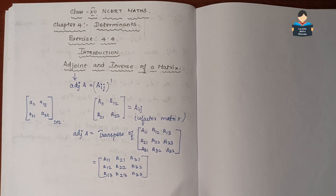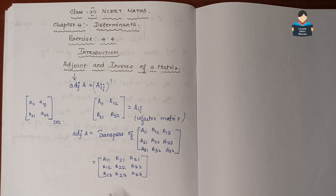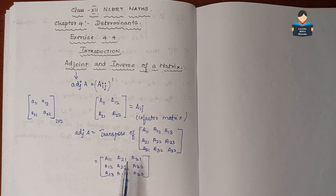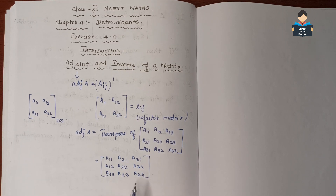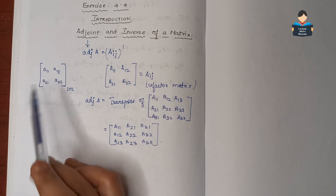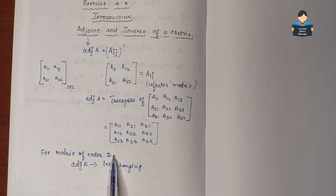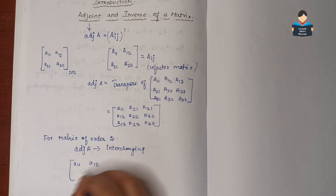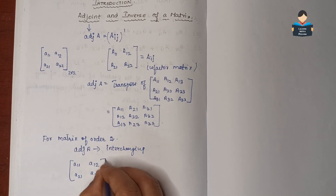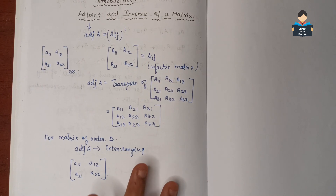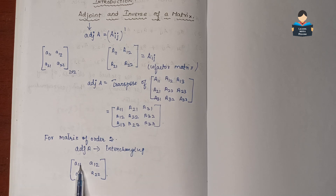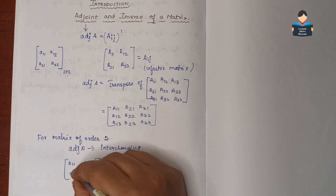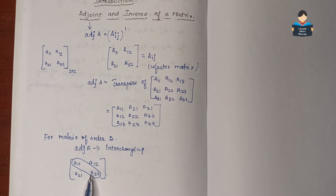This is one method. There is another method in the textbook which is easier, specifically for a square matrix of order 2x2. For a 2x2 matrix, the adjoint of A is found from elements A11, A12, A21, A22 by interchanging A11 and A22.